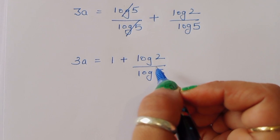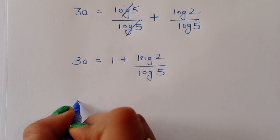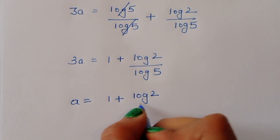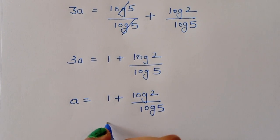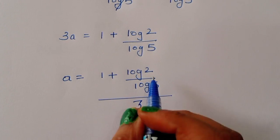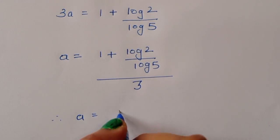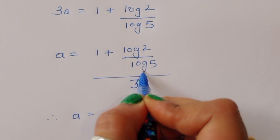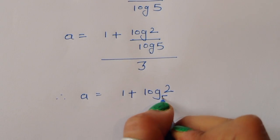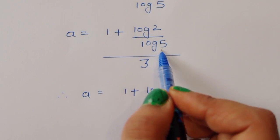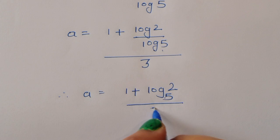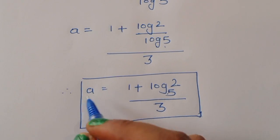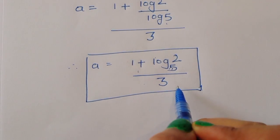So 3a equals 1 plus log(2)/log(5), which can be written as 1 plus log base 5 of 2. Therefore the value of a is equal to 1 plus log₅(2), all divided by 3. Now let's verify this value.